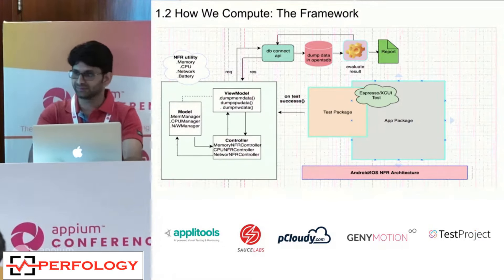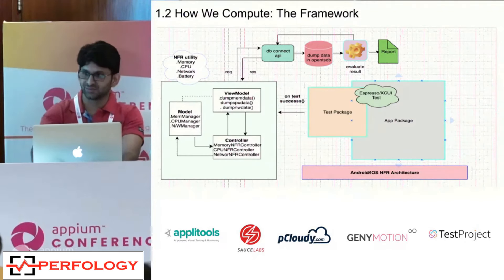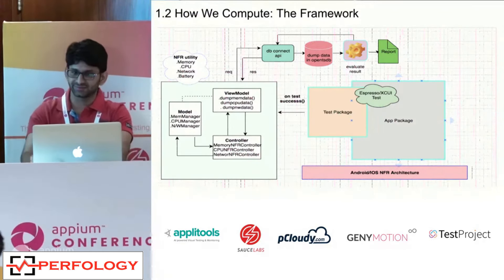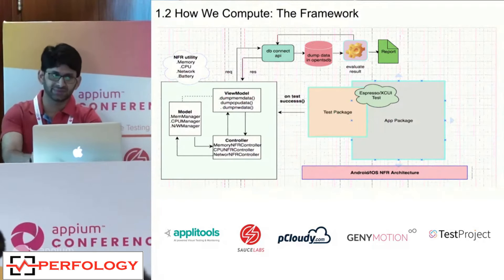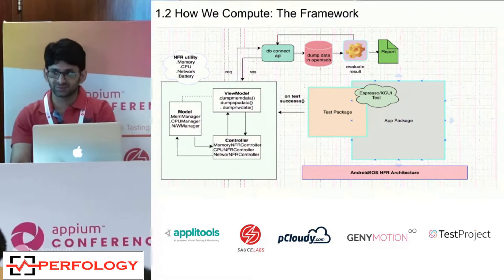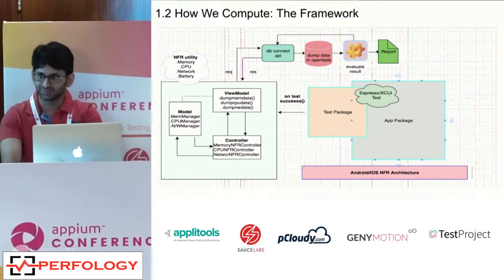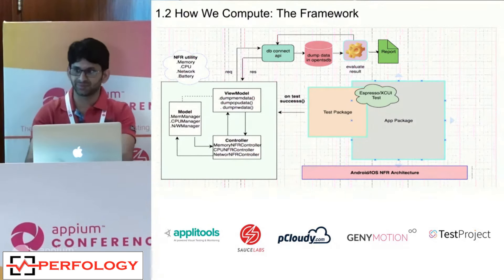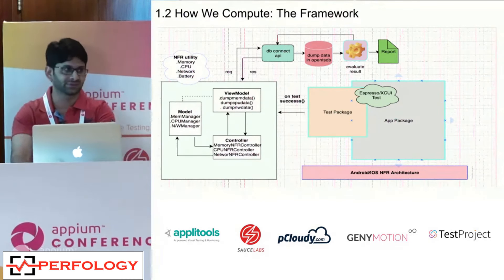This framework architecture is common for both Android and iOS — the same metrics are captured for both platforms. For iOS we use XCUITest, and for Android we use Espresso. We could achieve the same with an APM tool, but our requirements were different and we needed to find data from inside the application, which led us to build this framework.